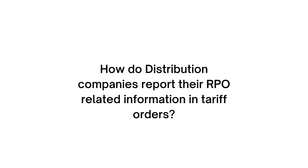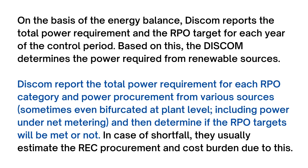How do distribution companies report their RPO-related information in tariff orders? On the basis of the energy balance, the distribution company reports the total power requirement and the RPO target for each year of the control period. Based on this, the distribution company determines the power required from renewable sources. Distribution companies report the total power requirement for each RPO category and power procurement from various sources, sometimes even bifurcated at plant level, including power under net metering, and then determine if the RPO targets will be met or not. In case of shortfall, they usually estimate the REC procurement and cost burden due to this.